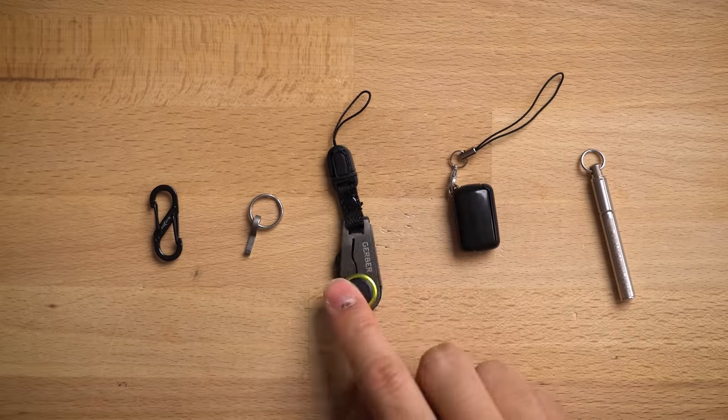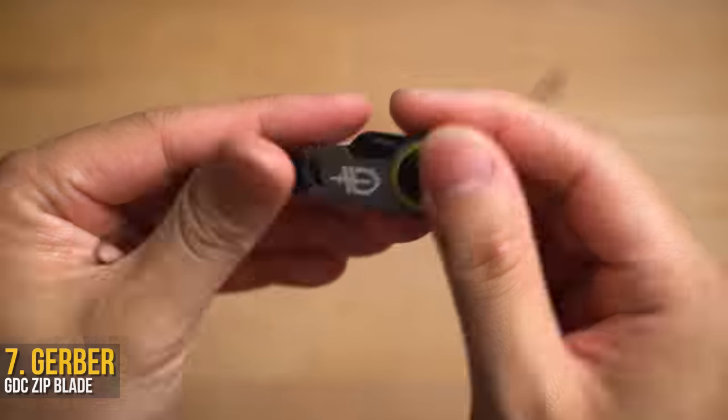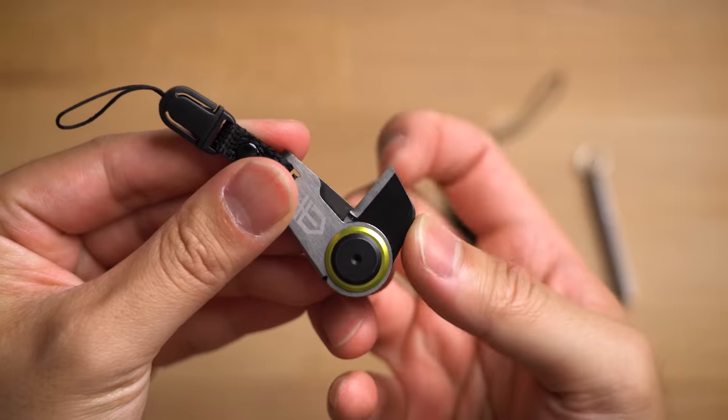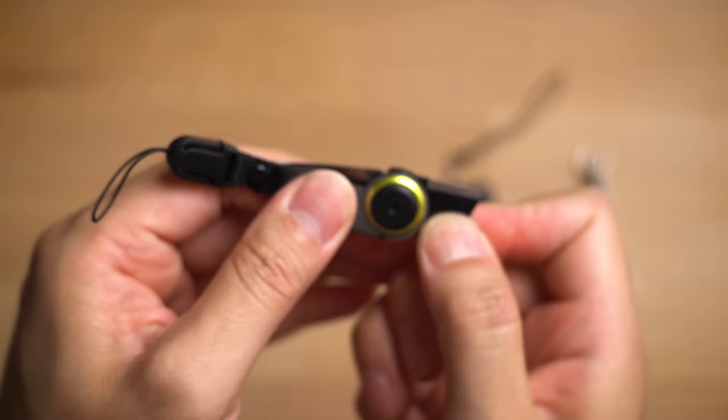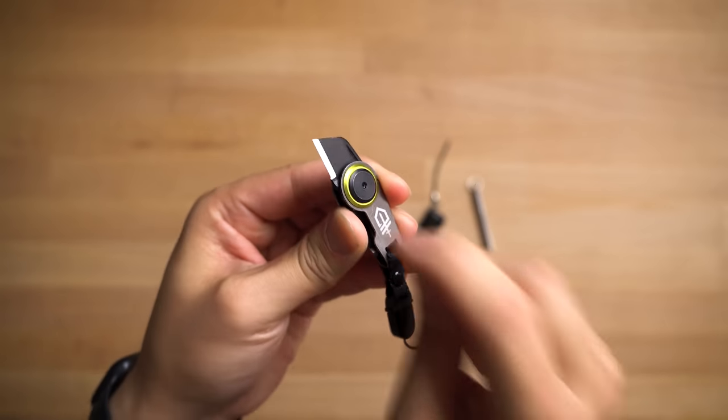Now, for a little more serious cutting action, there's the Gerber GDC Zip Blade. It can be stored on your keys or even on your zipper pulls, because it's actually got a pretty sharp blade for such a small package. The frame lock keeps everything in place, and it just works for the odd job, which I can see mainly using it to open boxes.